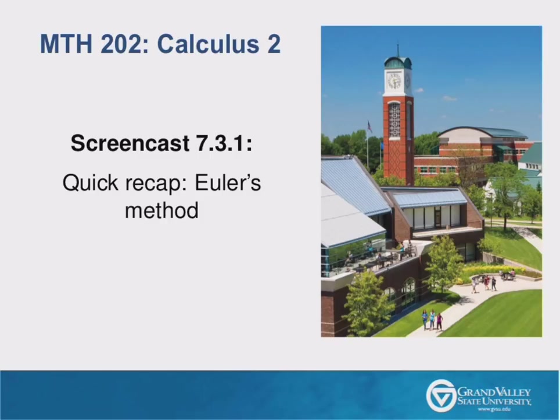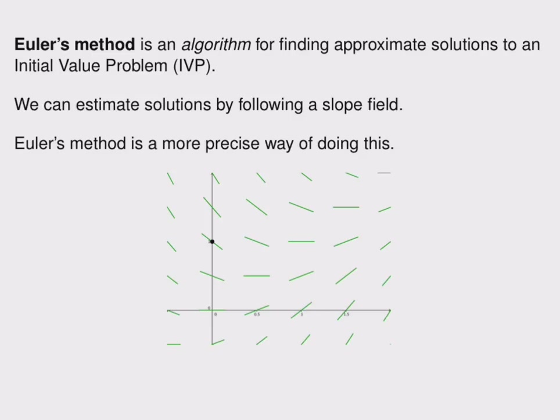Welcome to this quick recap of section 7.3 on Euler's method. Euler's method is an algorithm for finding approximate solutions to an initial value problem. An algorithm is a repeatable set of steps that can be used to get to an answer.